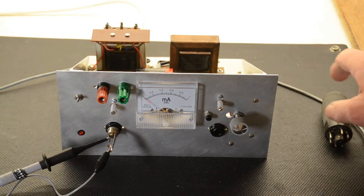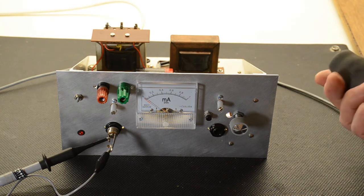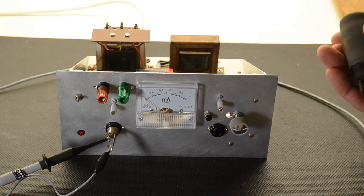Just like any valves, Thyratrons fail and can fail gradually. This is one we were just looking at. It gives a very good trace.